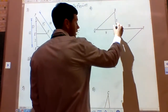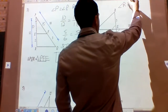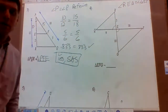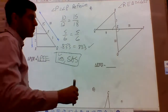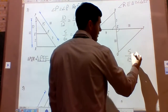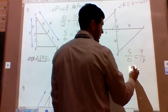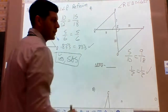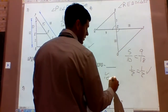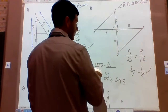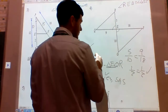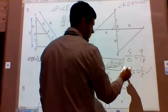For problem 4, we look for vertical angles. Angle REQ is congruent to angle GEF by vertical angles. For the sides, RE corresponds with GE — we know 5 over 10 and 9 over 18, both equal to 1/2. So we have two equal ratios meaning two proportional sides, and one pair of congruent angles. This is side-angle-side similarity. The similarity statement is triangle EFG similar to triangle EQR — E with E, F with Q, G with R.